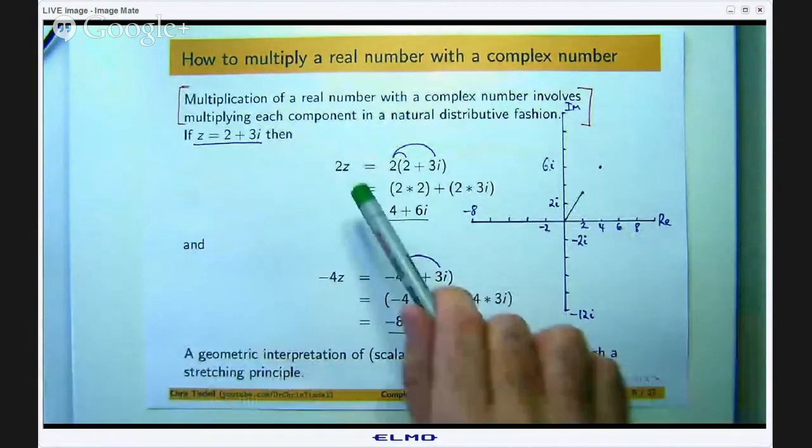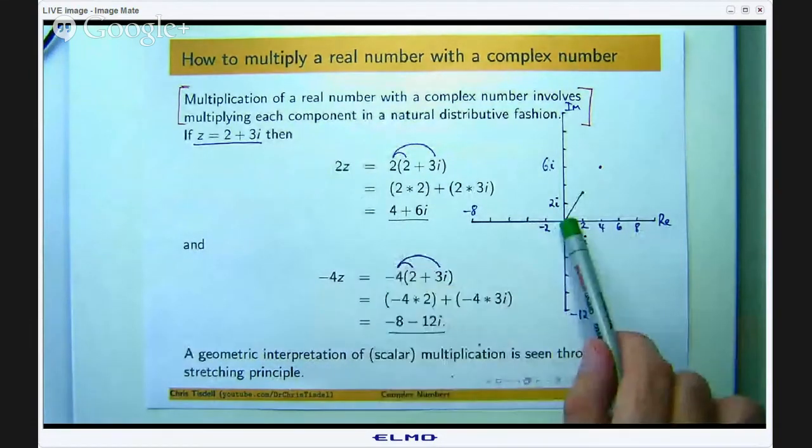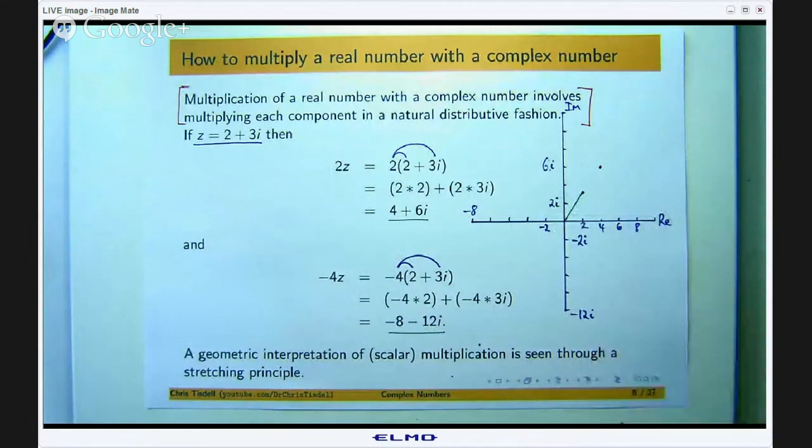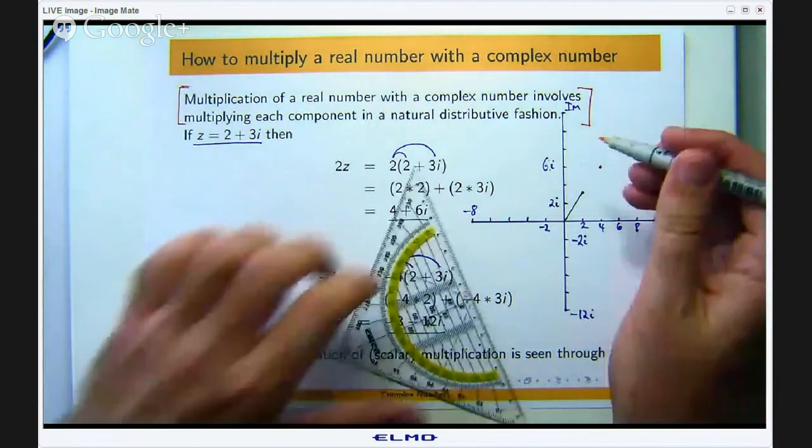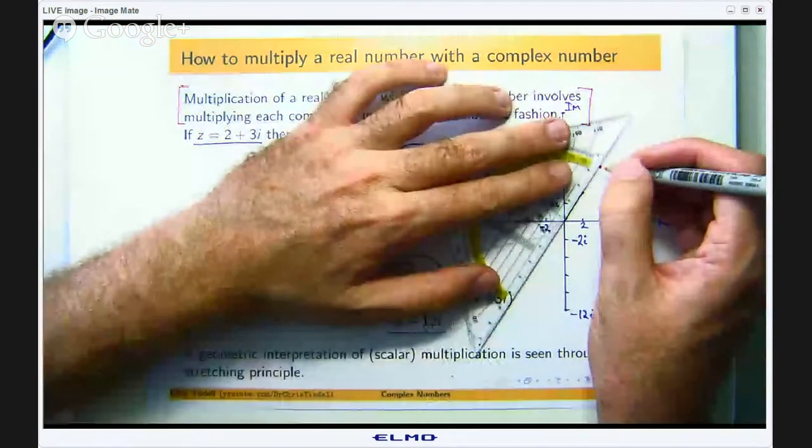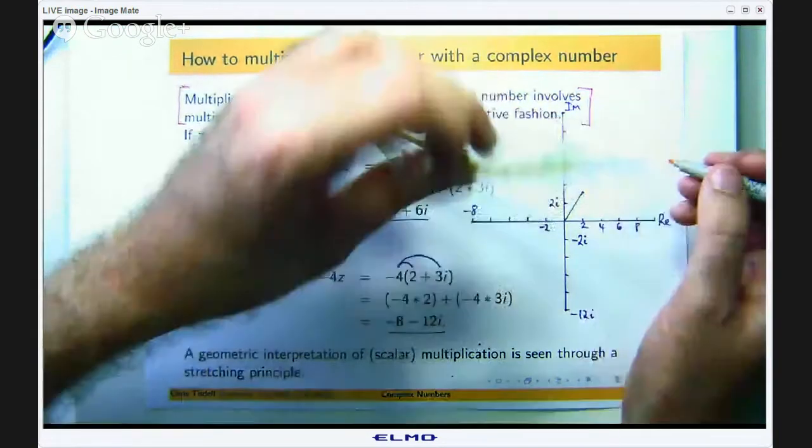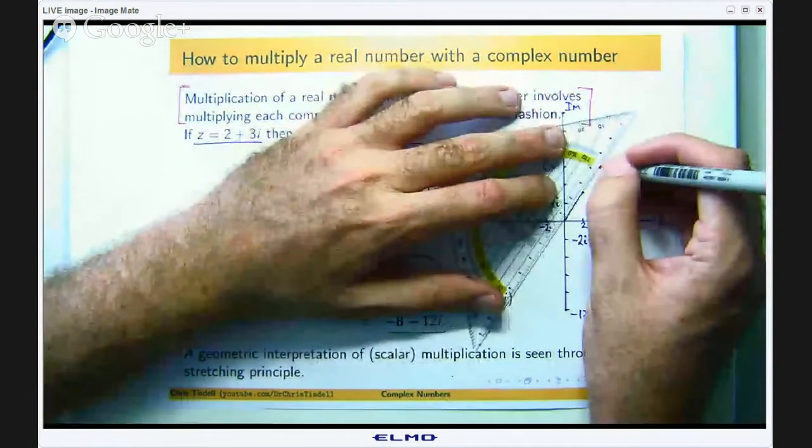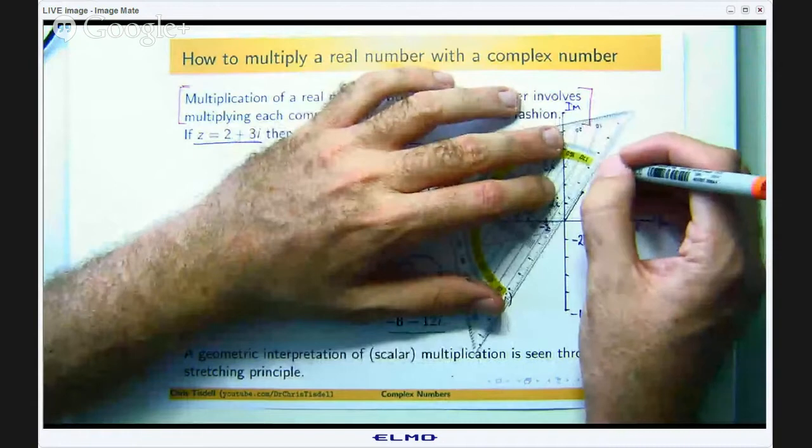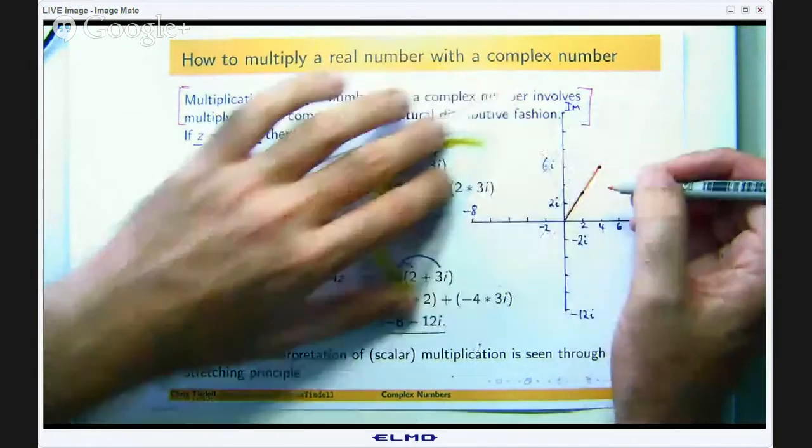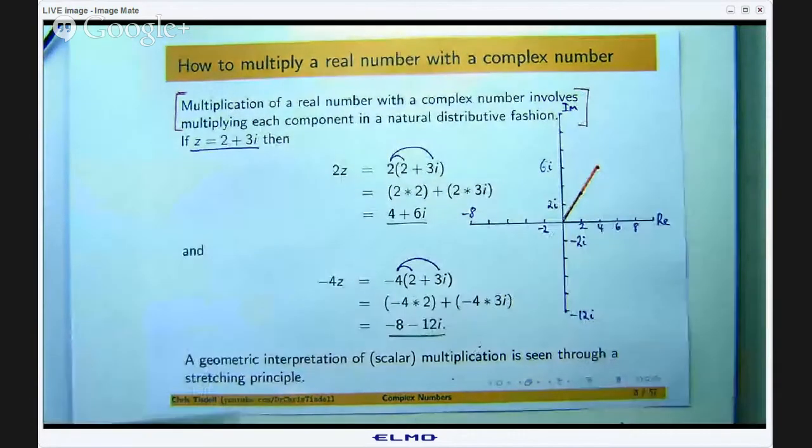So in this case what has happened is, you have taken the original complex number, multiplied it by 2 and you have scaled it by a factor of 2. So you can see if I extend that out then the distance has doubled to the origin.